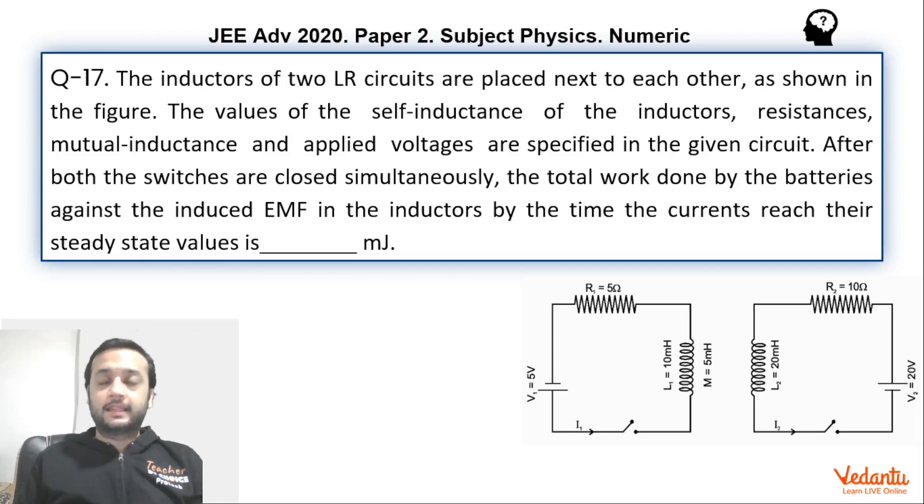Hi, dear students. Let's see this question that came in JEE Advanced paper 2 physics in the year 2020. This was based on the concept of mutual inductance in a circuit-based question and hence many students would have been stumped, confused, or would have left this question.